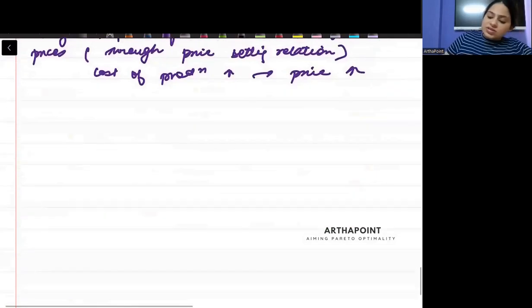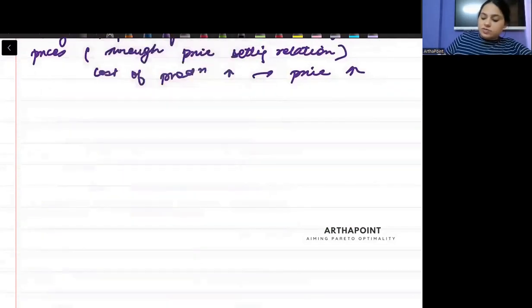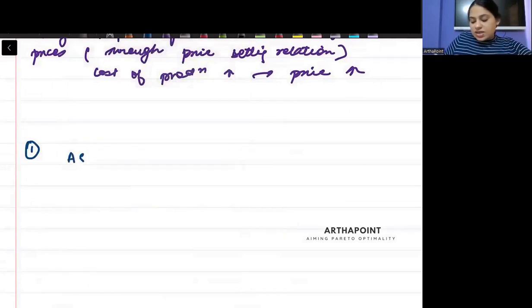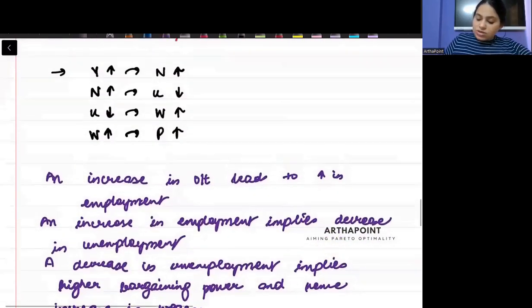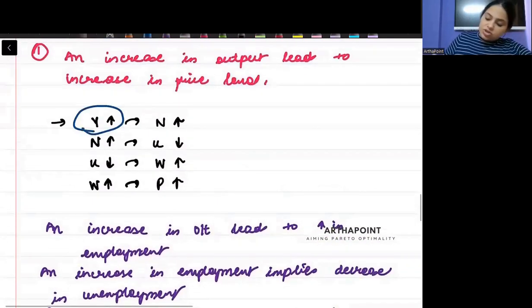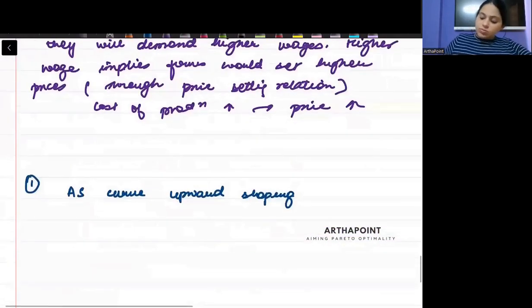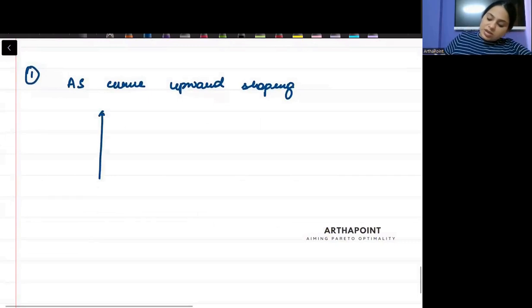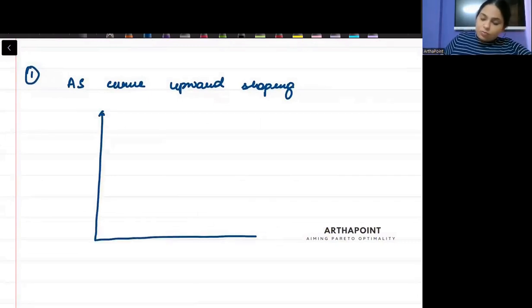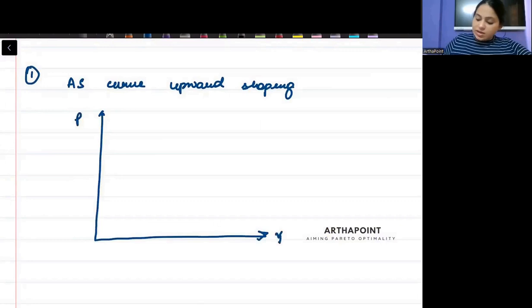So the first thing that you have to understand about the AS curve is that this AS curve is upward sloping. Why upward sloping? Because I just told you that there is a positive relationship between output and price.